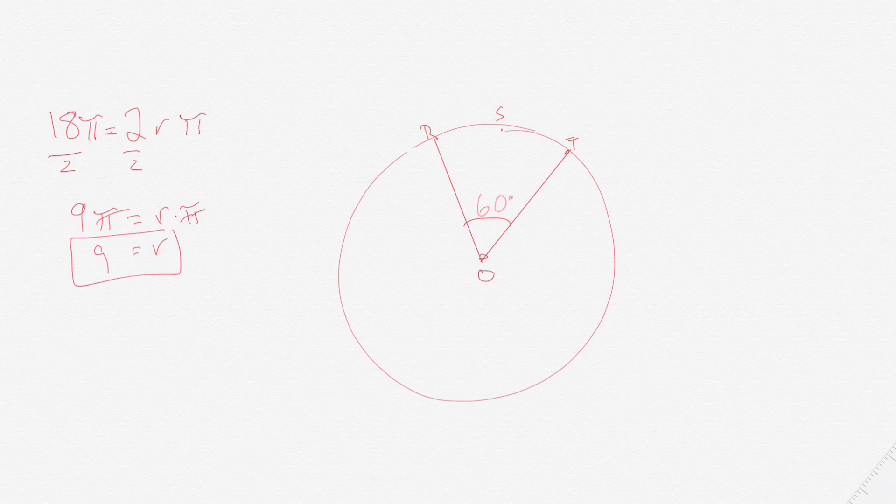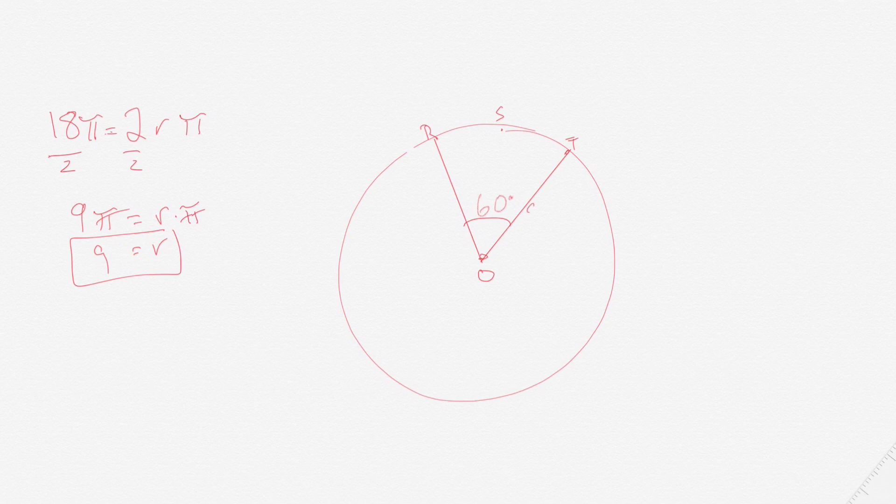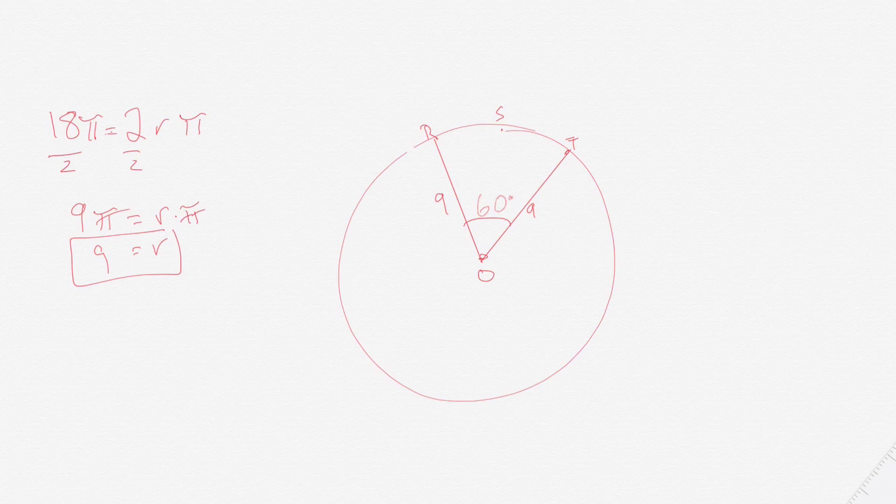If 9 is the radius, then O to R is 9 because that is a radius, and O to T is also 9 because that's a radius. And what we need now is that arc right there between R, S, T. We need to get the perimeter of that arc.